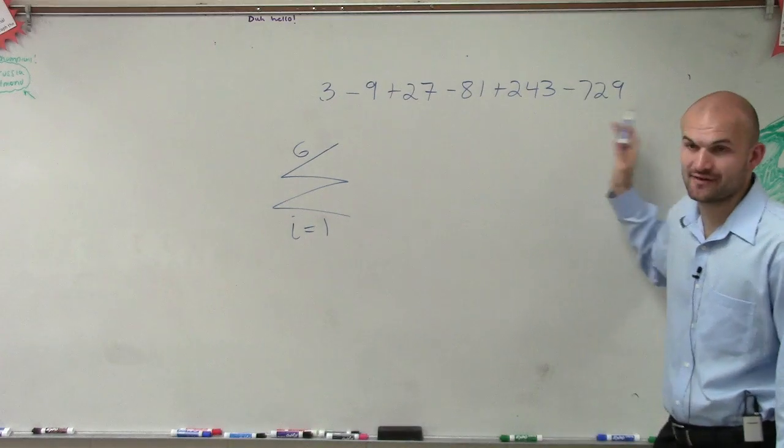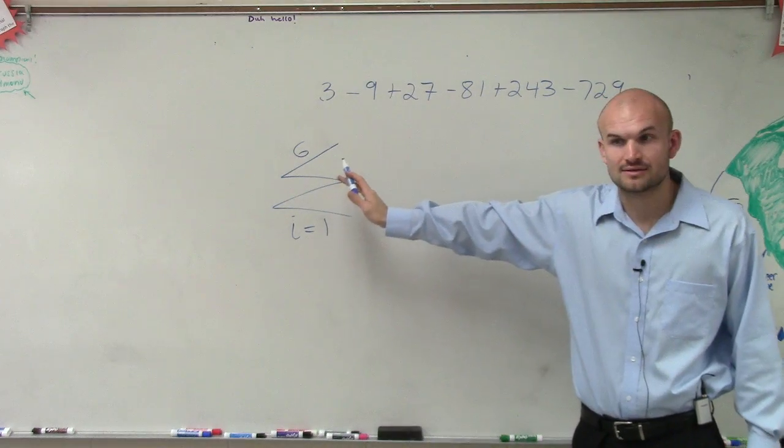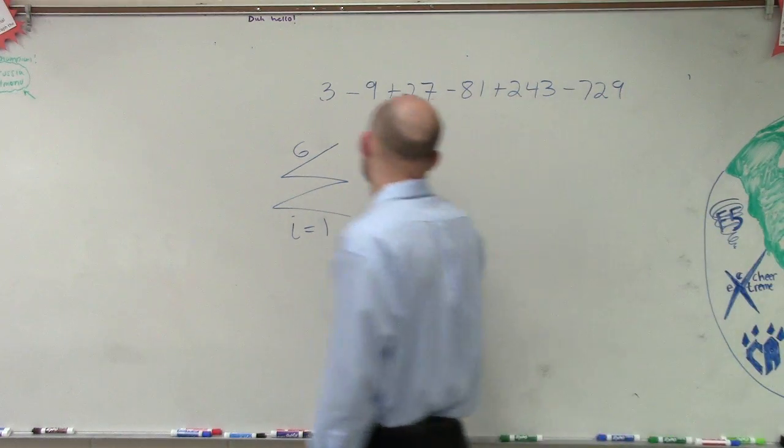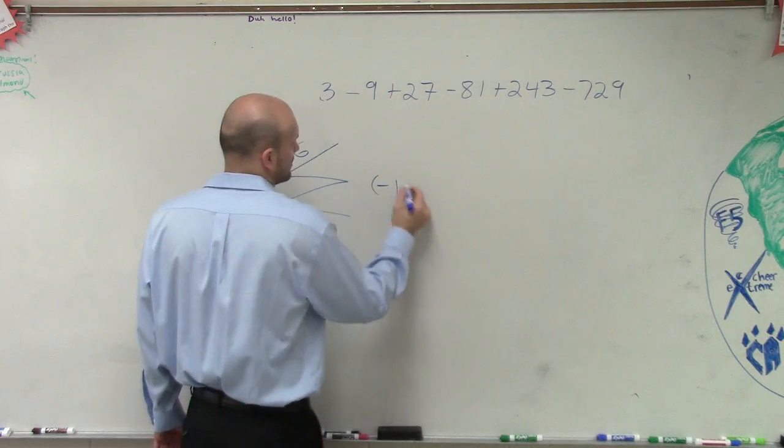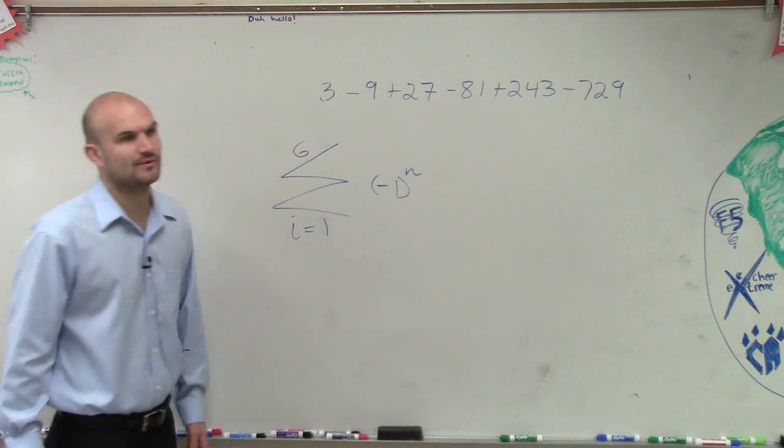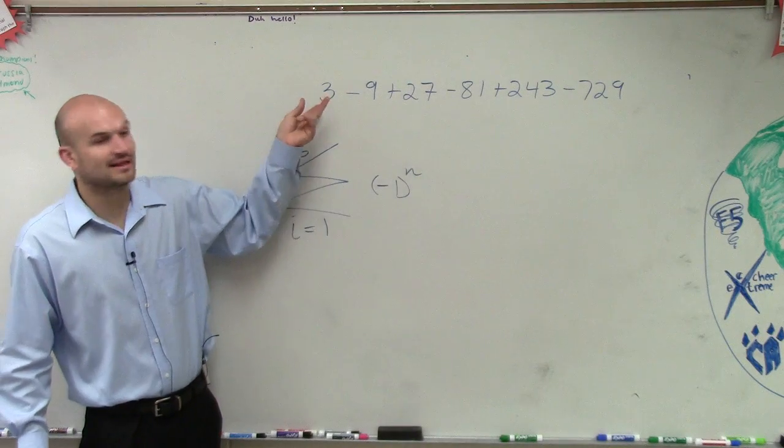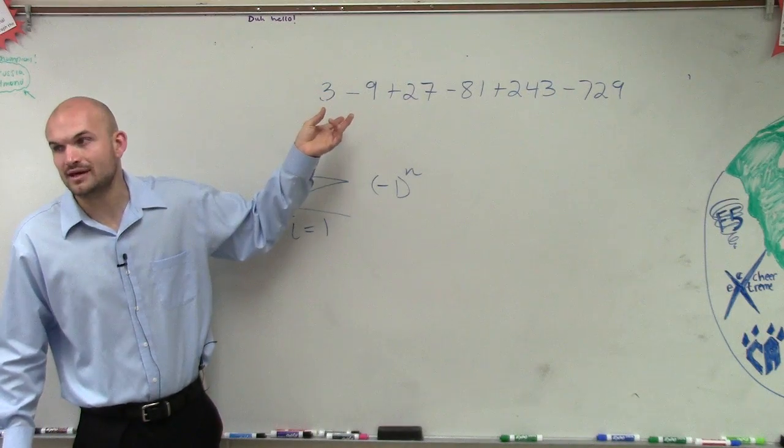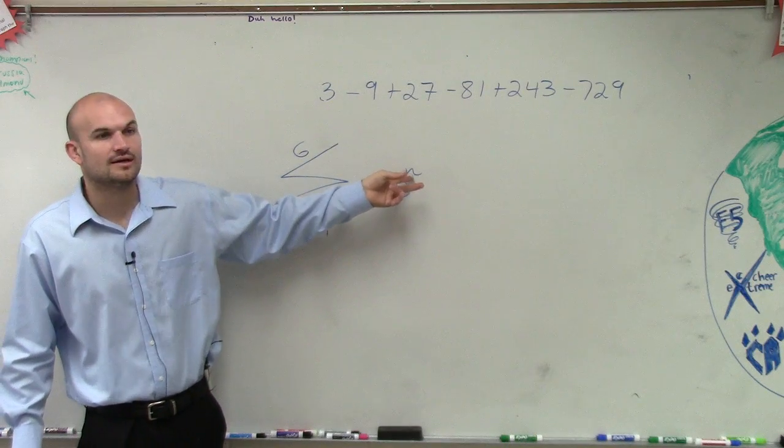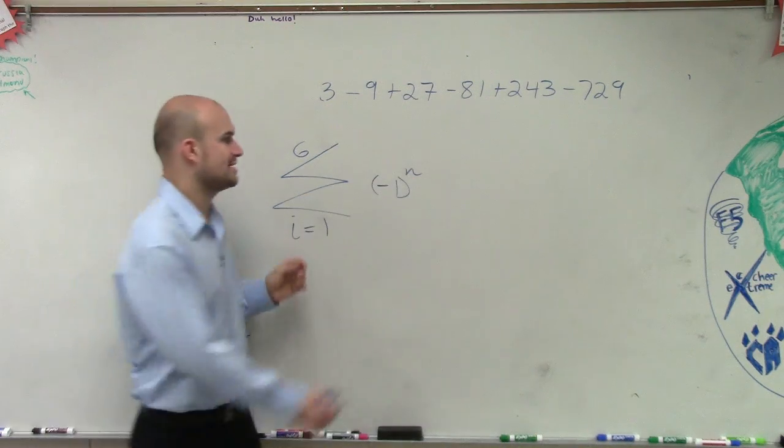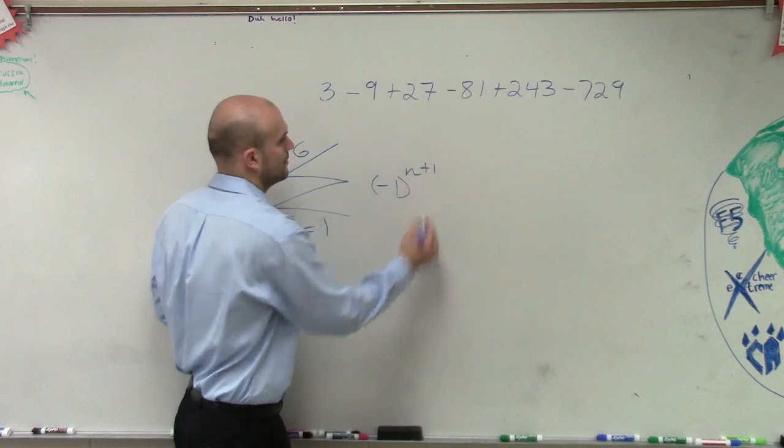Now, first of all, I automatically notice that I have alternating signs, correct? So automatically, when I see alternating signs, I know my rule is going to be negative one raised to the N. However, if it's one, that's going to make this negative. So since it's even, that means my first term has to be N plus one, right, to make it even.